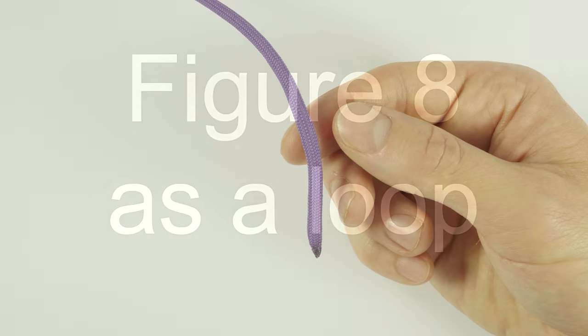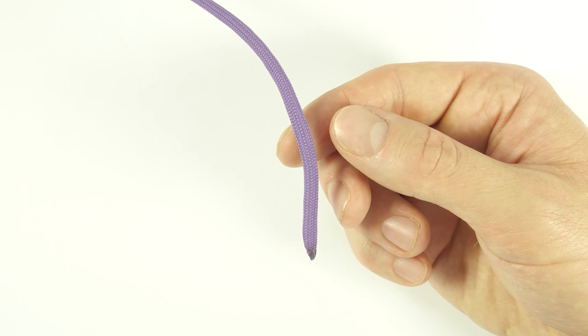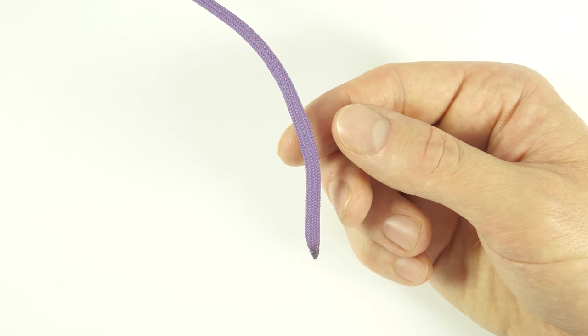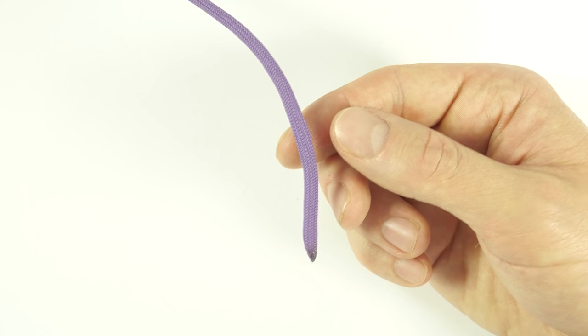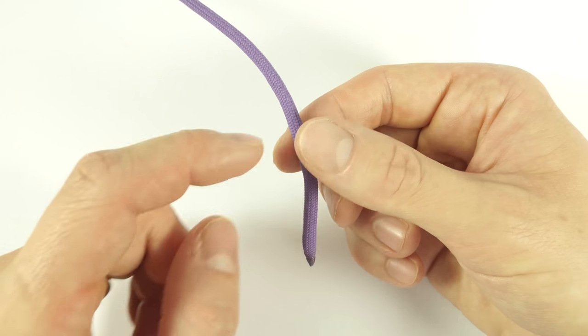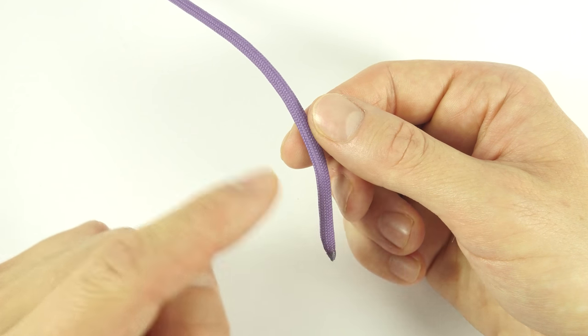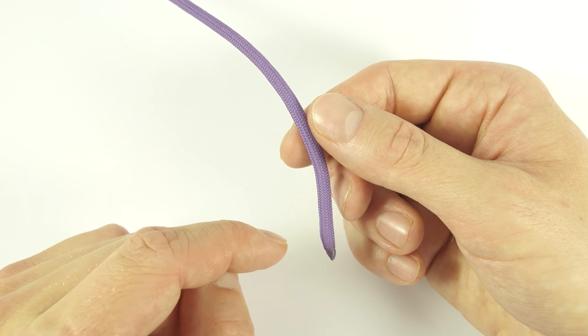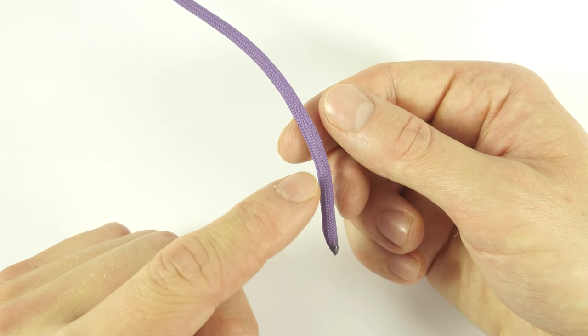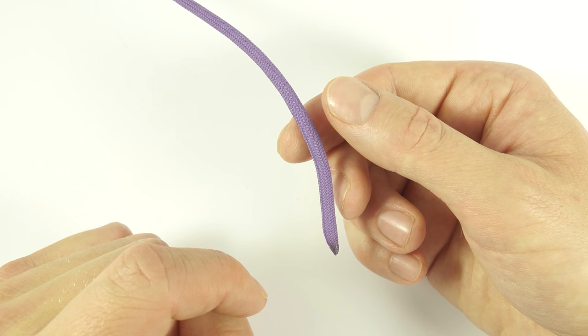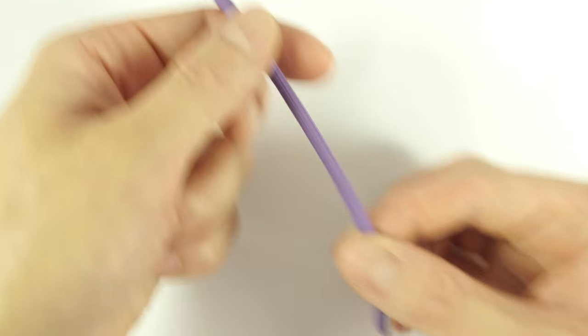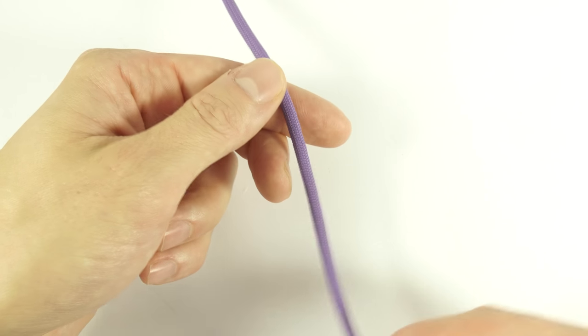The second use for the figure 8 knot is as a means of creating a loop. Now loops are very handy on a boat since you can attach your rope onto various posts and rails. You can also use a loop to dock your boat. So first off, tie a figure 8 knot.